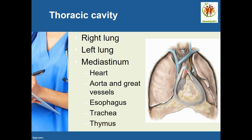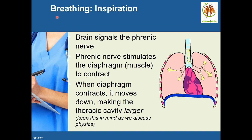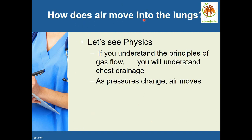Let's see the mechanics of breathing. During inspiration, the brain signals the phrenic nerve. The phrenic nerve stimulates the diaphragm muscles to contract. When the diaphragm muscles contract, it moves down, making the thoracic cavity larger. Keep this in mind — when we discuss the physics it will be more clear how air moves into the lungs.